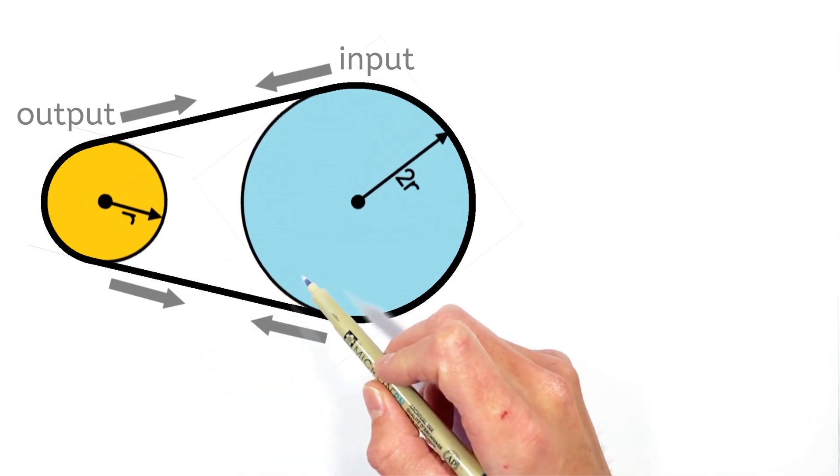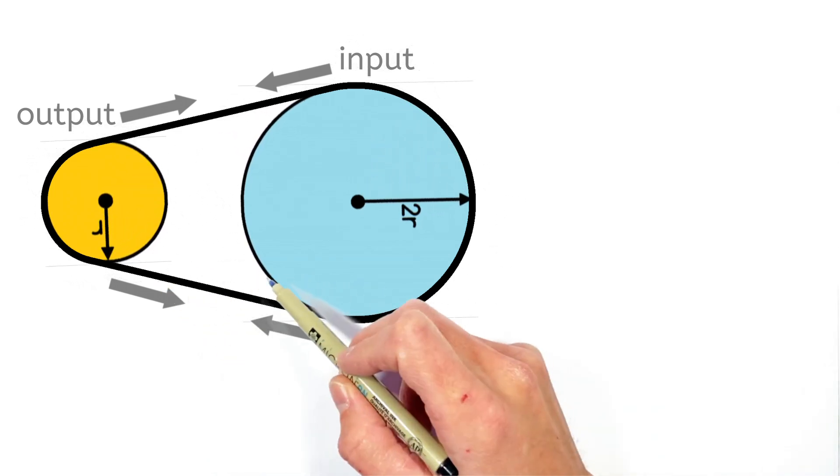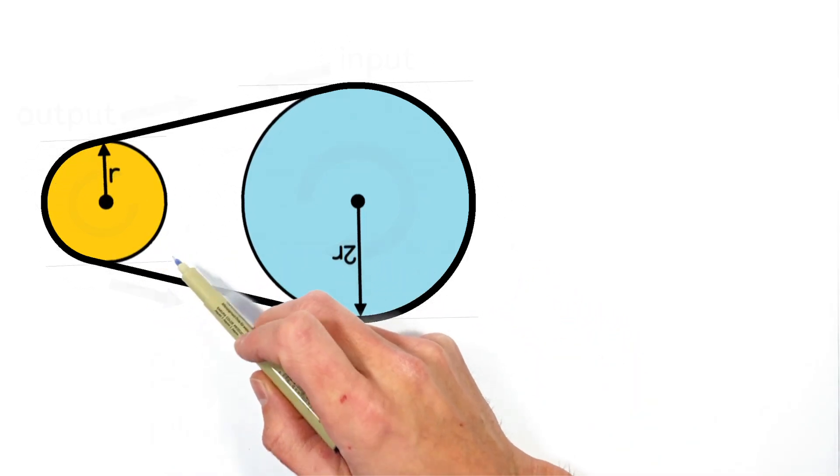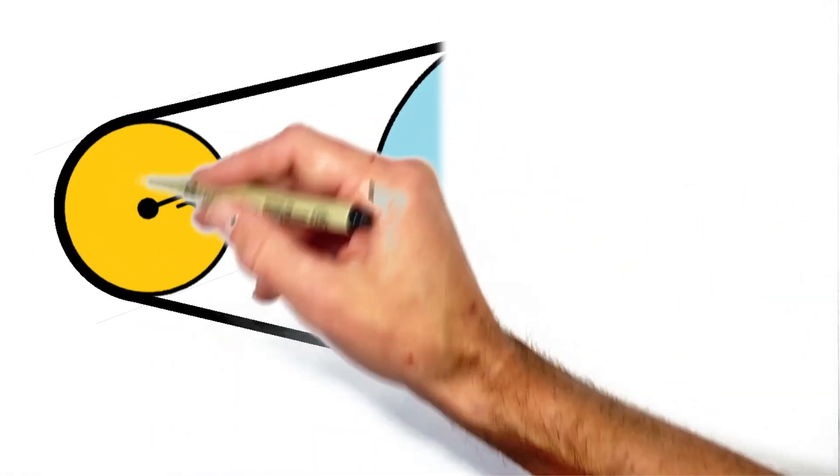Now we can relate the tension or the pulling force in the belt to the torque produced in this pulley by looking at all the forces on just a single pulley.